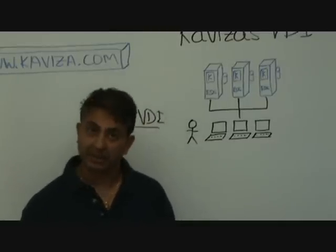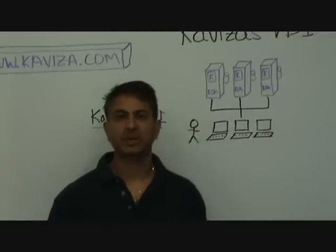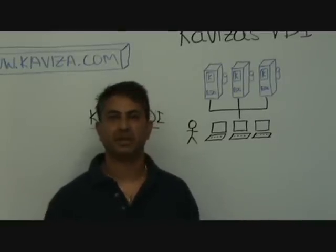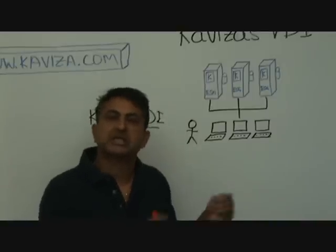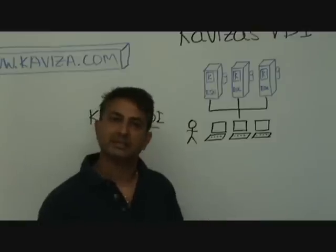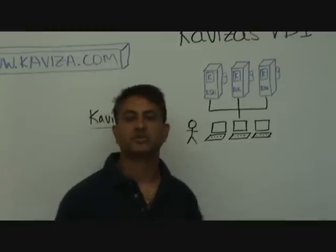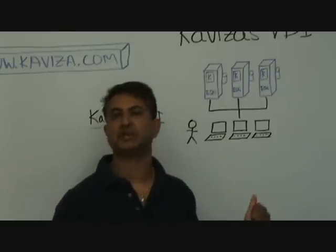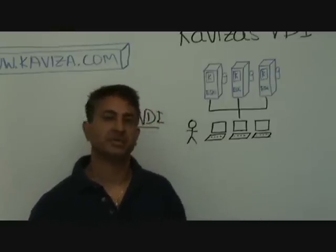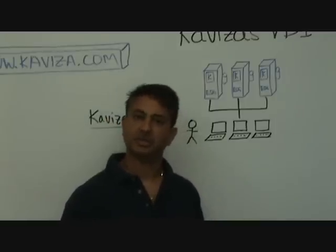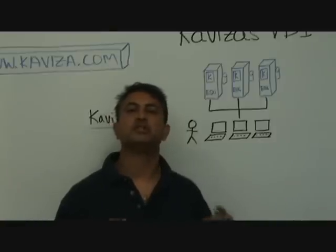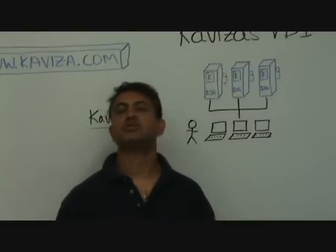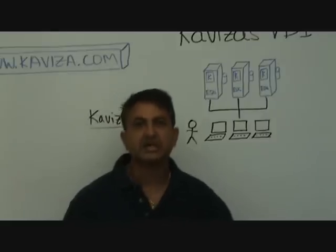If you want high availability, you bring in a second server, point it at the first one, answer two questions, and now you have a high-availability grid in minutes. This is a modern architecture that scales like Google and Amazon. You can add a third, fourth, or fifth server on demand, on the fly. You can have a production system up and running in hours. And the beauty of it is, you don't manage each server individually — Kaviza's management console provides one logical view and makes it seem as though it's one logical server, so everything is done under the hood.